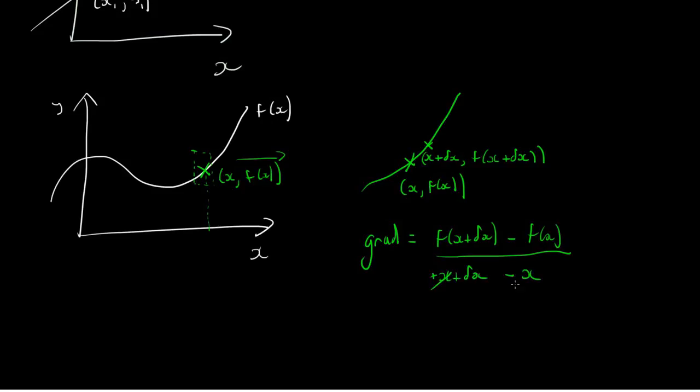So we have a plus x and a minus x on the bottom, so they cancel. We end up with the gradient is equal to f of x plus delta x minus f of x divided by delta x. That's all that's left underneath.